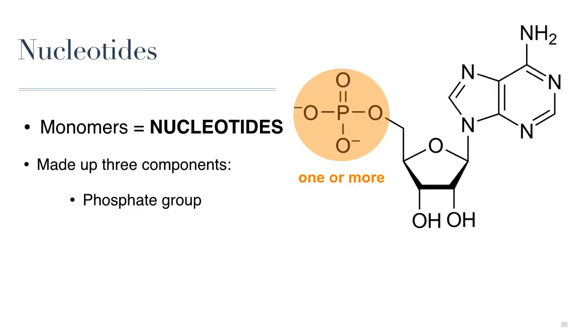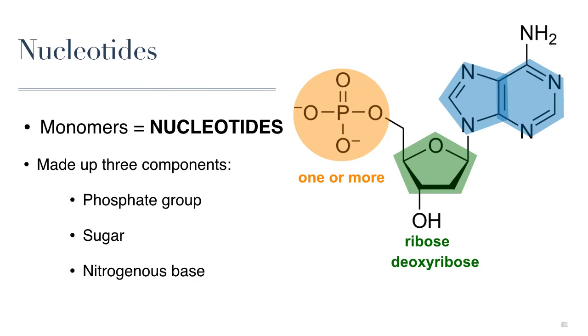All nucleotides are made up of three components: at least one phosphate group, a pentose sugar either ribose or deoxyribose, which is basically a ribose with one less oxygen, and one of five different nitrogenous bases.